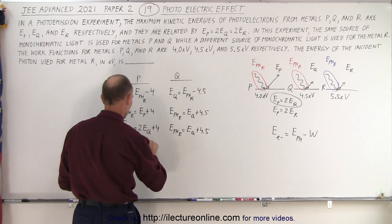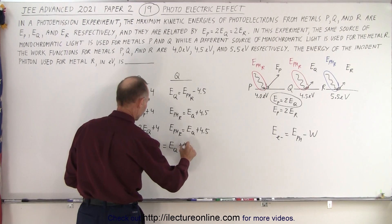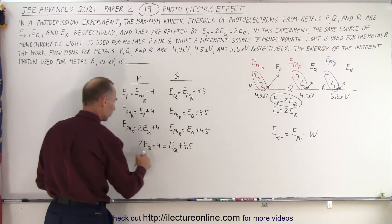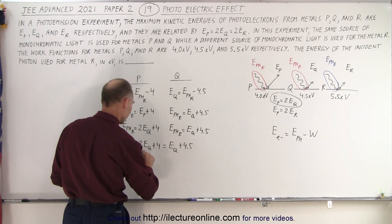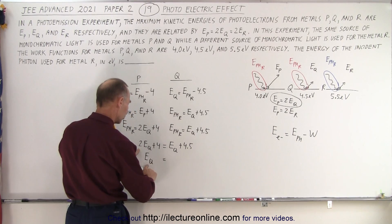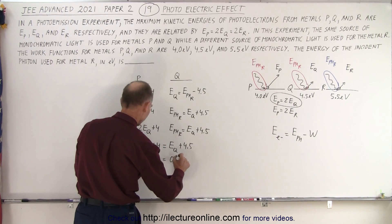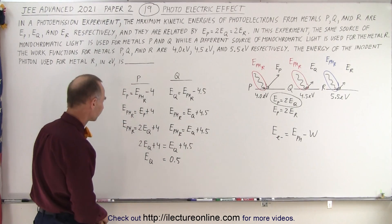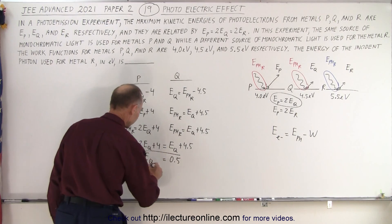So 2·E_q + 4 = E_q + 4.5. Moving terms gives us E_q = 4.5 − 4 = 0.5 eV.